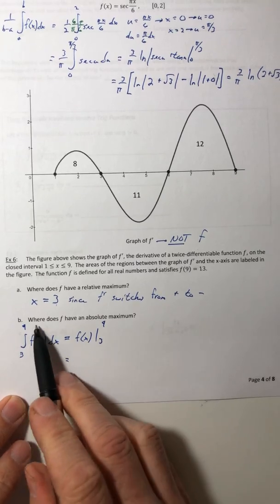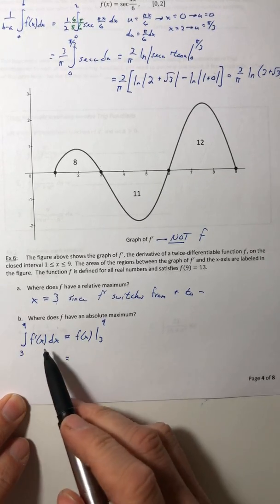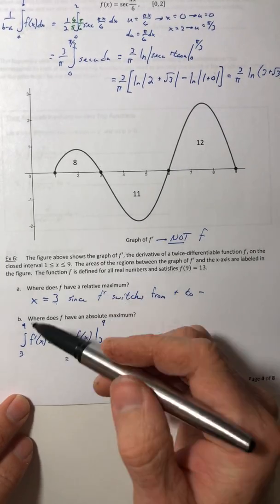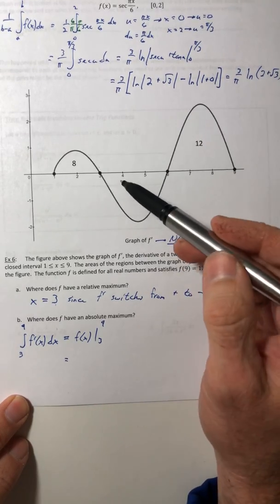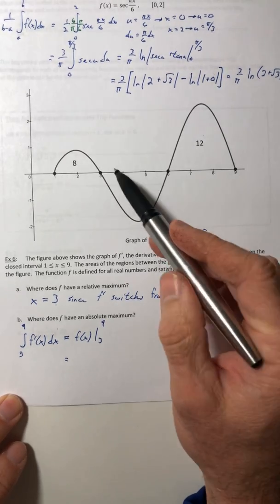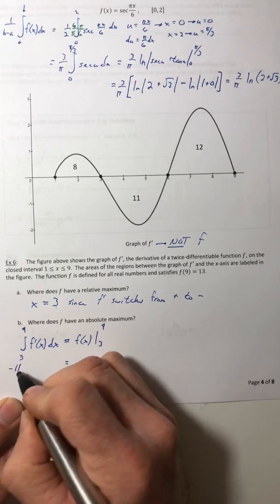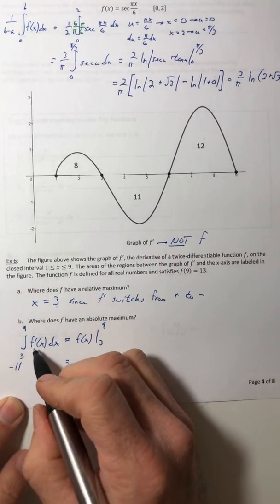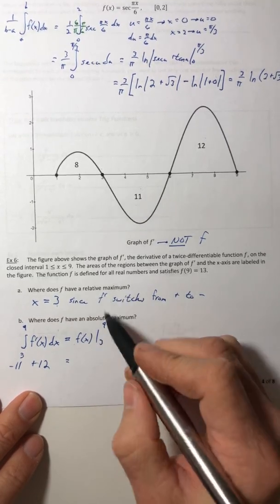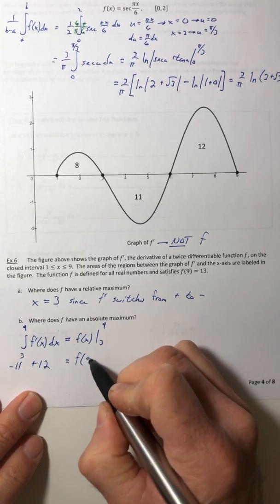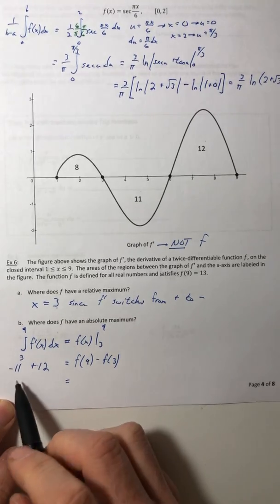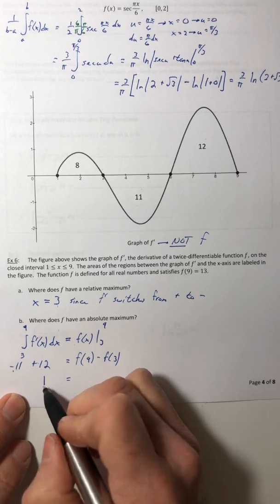Let's look at this right here. I set up a definite integral and a definite integral represents the area under the curve. So from 3 to 9 I have this region and this region, the 11 and the 12. Well since the 11 is below the x-axis, it's going to make a negative, and the 12 will end up being positive. Now on the right side I need to plug in the 9 and plug in the 3.